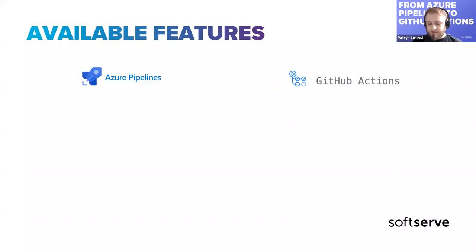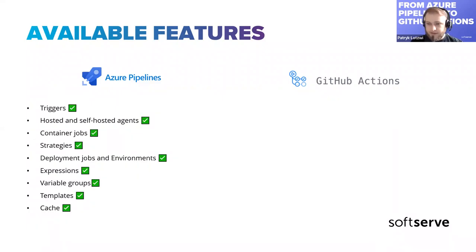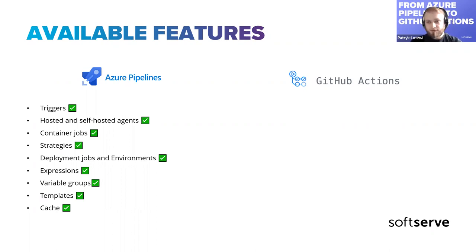About the features — let's see what we have for Azure Pipelines. The basic features: triggers, because we need to run our pipelines somehow. We have hosted and self-hosted agents, so we can use Microsoft agents but we can also create our own agent pools. There's one feature I like very much which is container jobs. You can create a Docker image with all the required tools and run the whole pipeline in the context of that Docker container.